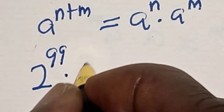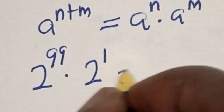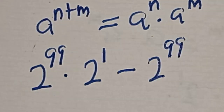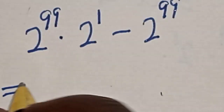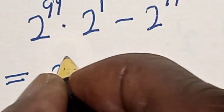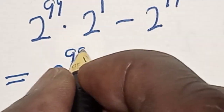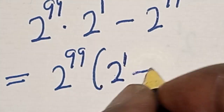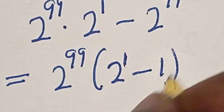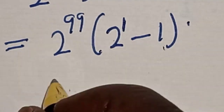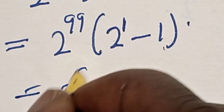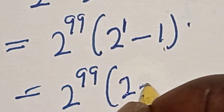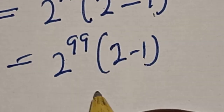This becomes 2 raised to power 99 multiplied by 2 raised to power 1, minus 2 raised to power 99. Then this is equal to 2 raised to power 99 into 2 raised to power 1, minus 1. Now let's see — this is equal to 2 raised to power 99 into 2 raised to power 1, which is 2, minus 1.